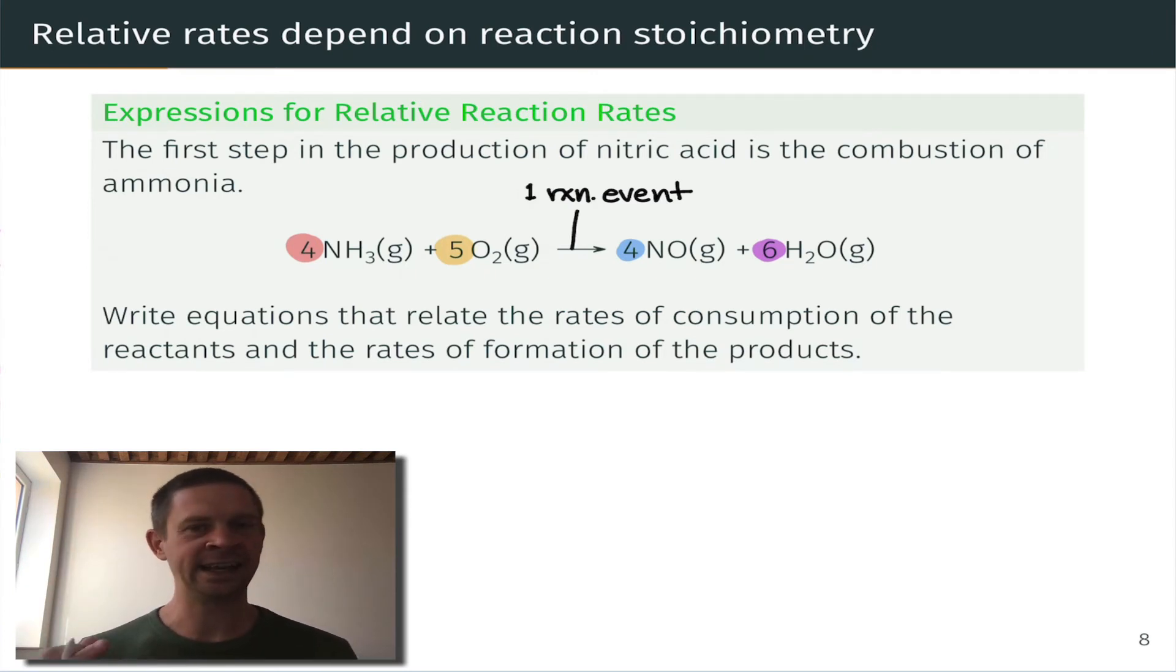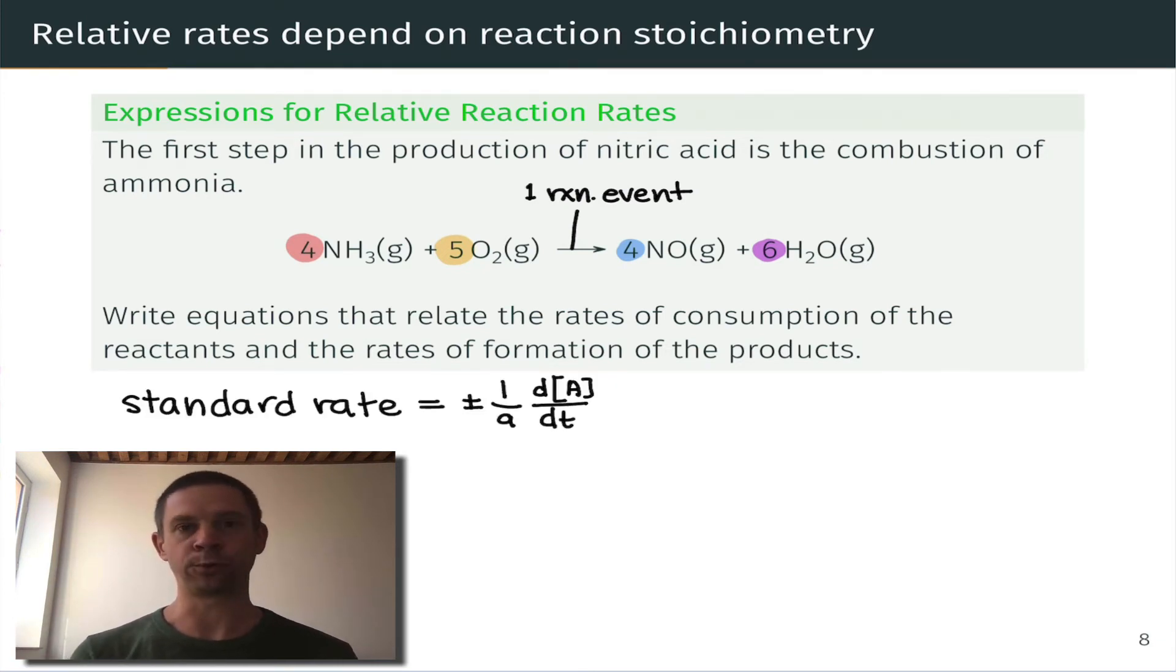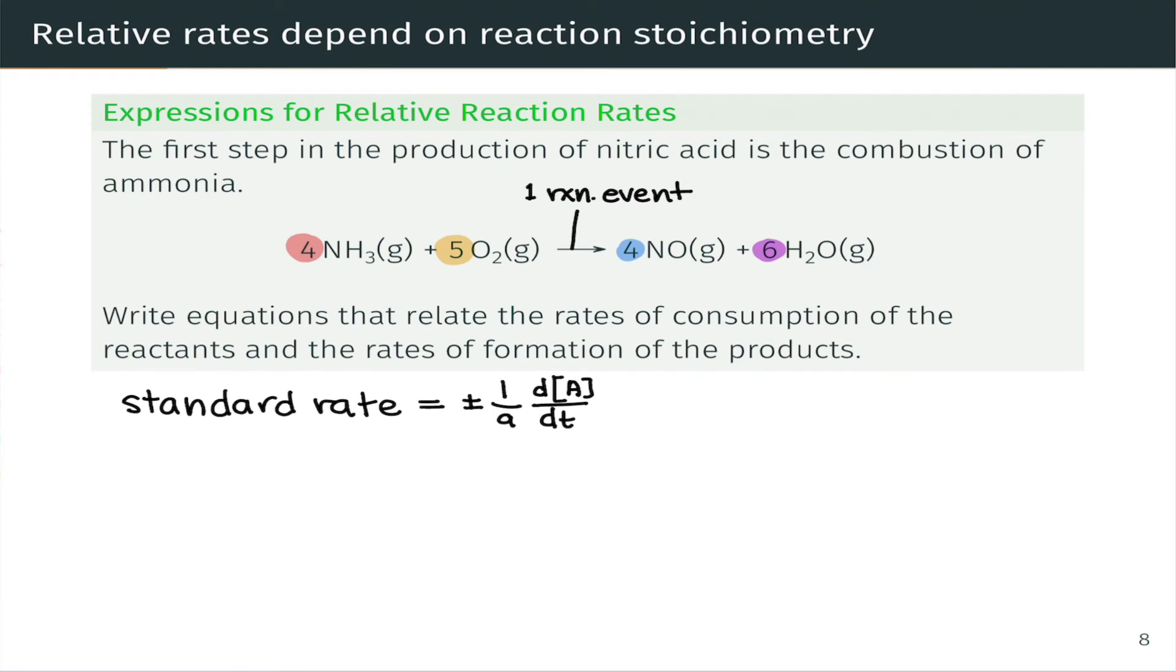Before I dig in and start writing equations, I think it's helpful here to harken back to the definition of standard rates. So for a general species A, and this can be a reactant or a product, the standard rate is one over little a, its stoichiometric coefficient, dA dt, if we're thinking about instantaneous rates. And we may have a positive or a negative sign out front, depending on whether we're dealing with a product or reactant, respectively.